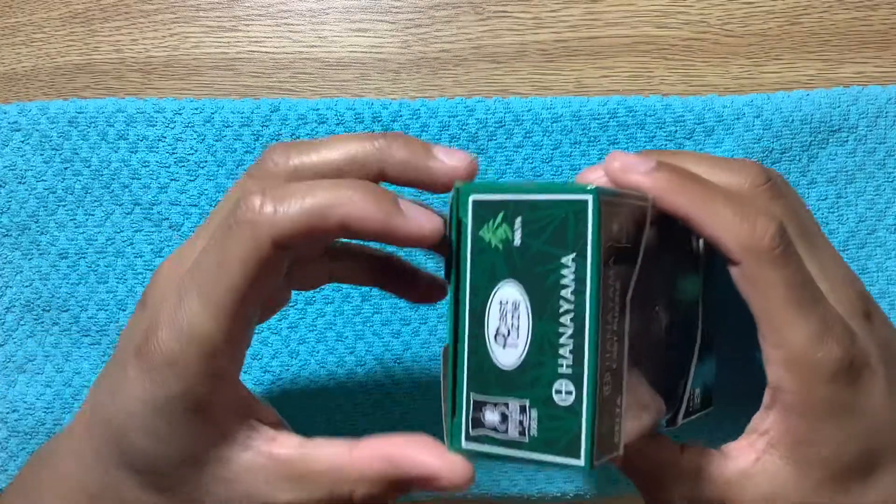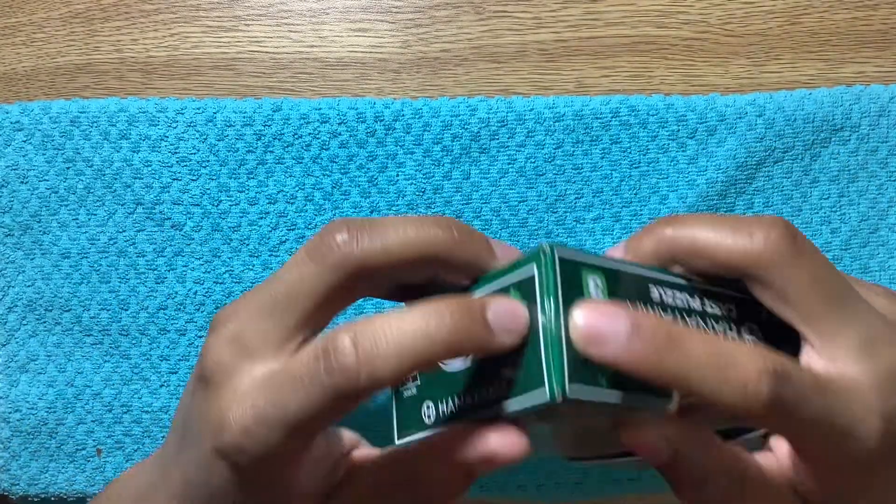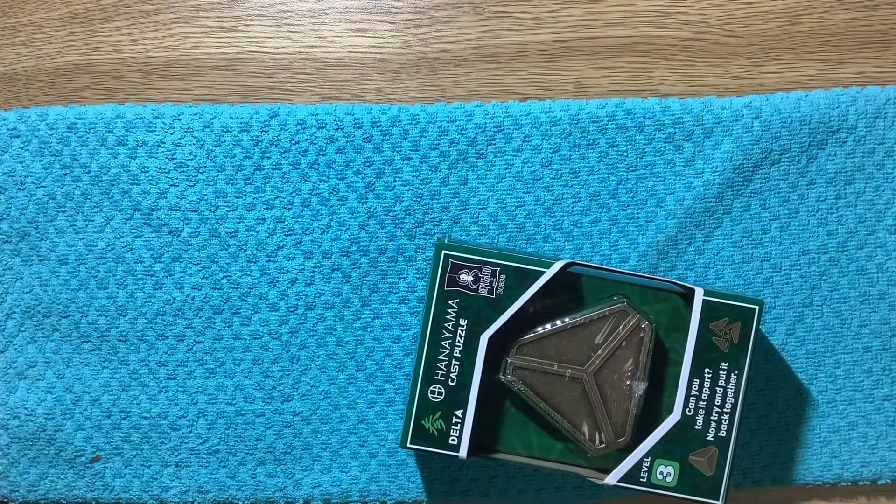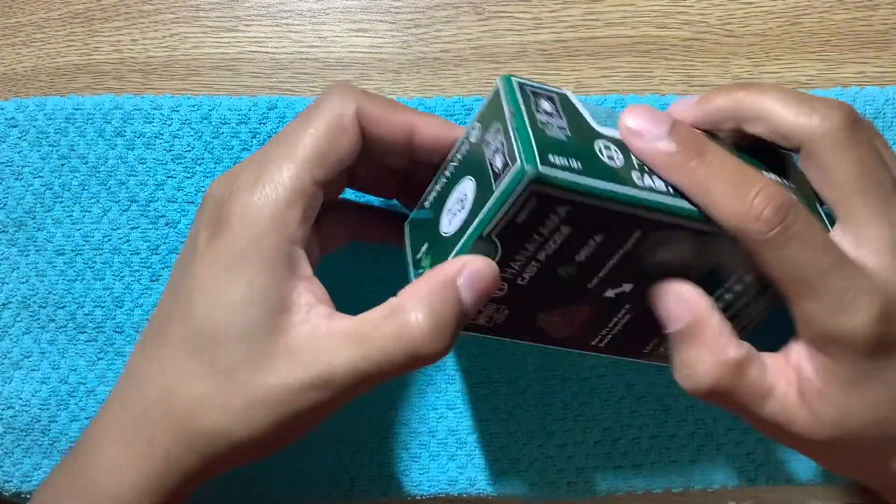So first off, we got to open up this box. We got some tape over here. There's some tape right here. You know what this looks like a job for? Jackknife 3000. Jackknife don't play games.